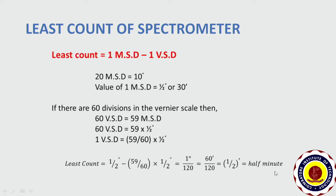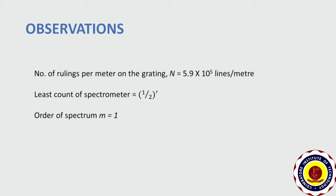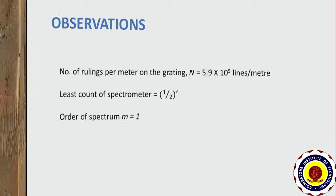We have already calculated the number of lines per meter in the grating, which is 5.9 × 10⁵ lines per meter. The least count of the spectrometer has also been calculated, which is half a minute. The order of the spectrum we are going to take is 1 — meaning first order spectrum.